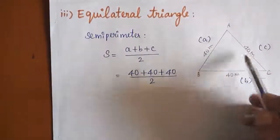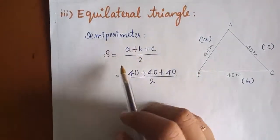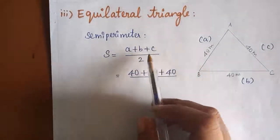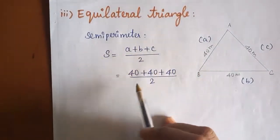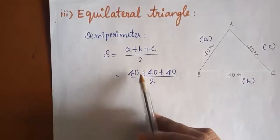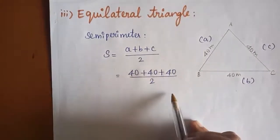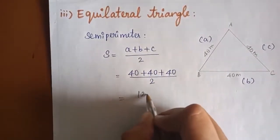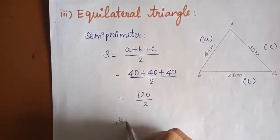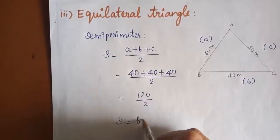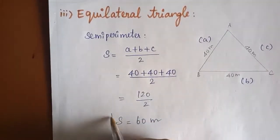For the equilateral triangle, all sides are equal. Semi-perimeter S = (40 + 40 + 40)/2 = 120/2 = 60 metres.